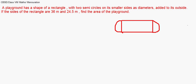This side is 36 meters and the smaller side is 24.5 meter. Because it has already informed that the semi-circles are on its smaller side as the diameters, I have made it on the smaller side. So the total area will be area of this rectangle and the area of these two semi-circles.